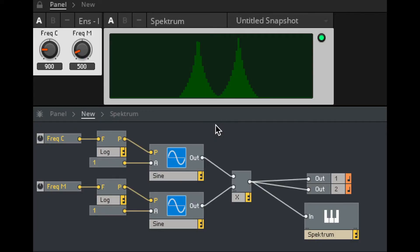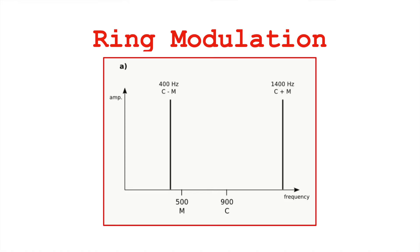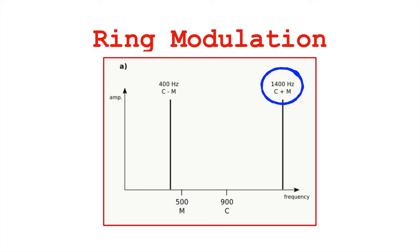Ring modulation, a type of AM synthesis, demonstrates this very clearly. If you have a carrier — an original pitch at 900 Hz — and you multiply it by another sine wave at 500 Hz, you end up with two sidebands: one at the carrier frequency plus the modulation frequency (900 + 500 = 1400 Hz), and one at the carrier frequency minus the modulation frequency (900 − 500 = 400 Hz).